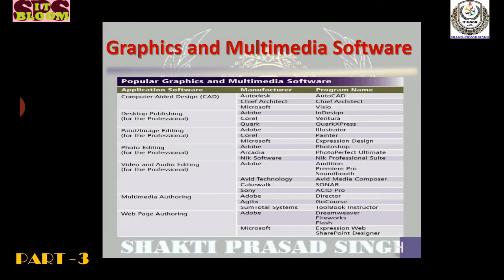Photo editing software — the program name manufactured by Adobe is Photoshop. Arcadia's photo editing software name is Photo Perfect Ultimate. Nick Software also manufactures a professional photo editing program. Video and audio editing software for professionals: manufactured by Adobe, the program names are Audition, Premiere Pro, and SoundBooth. The next company is Avid Technology — program name is Media Composer. Cakewalk's program name is Sonar, and Sony's program name is Acid Pro.